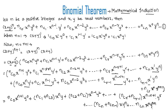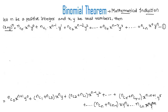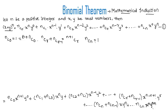Now let us find the values of the binomial coefficients. We know nC0 = 1, which can be written as (n+1)C0. We will use the formula nCr + nC(r-1) = (n+1)Cr to find the remaining terms. Also, nCn = 1 can be written as (n+1)C(n+1). So nC0 · x^(n+1) · y^0 becomes (n+1)C0 · x^(n+1) · y^0.